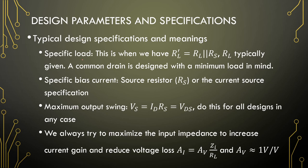Typically the common drain is designed with a minimum load in mind. Your source resistor will provide bias current, and there are two methods to choose your source resistor — we will get to those in the examples. You always try to have VS equal to ID·RS, equal to your VDS, so there is no ID·RD in the common drain amplifier; everything is around the source resistor. We always try to maximize the input impedance, and remember that the voltage gain should be roughly 1 V/V.